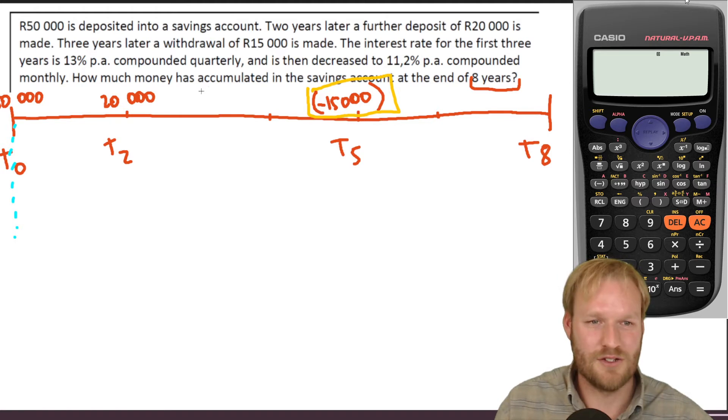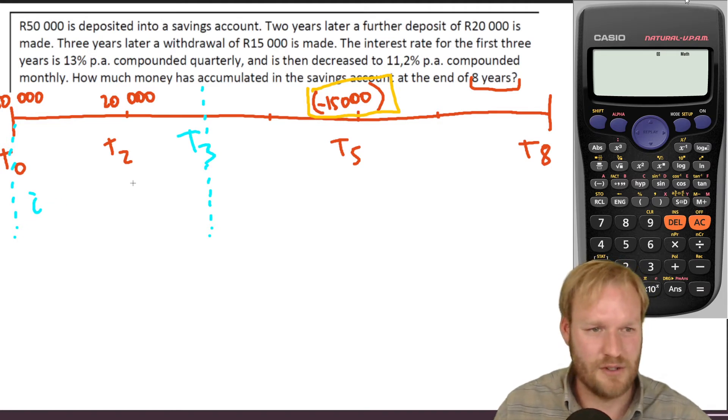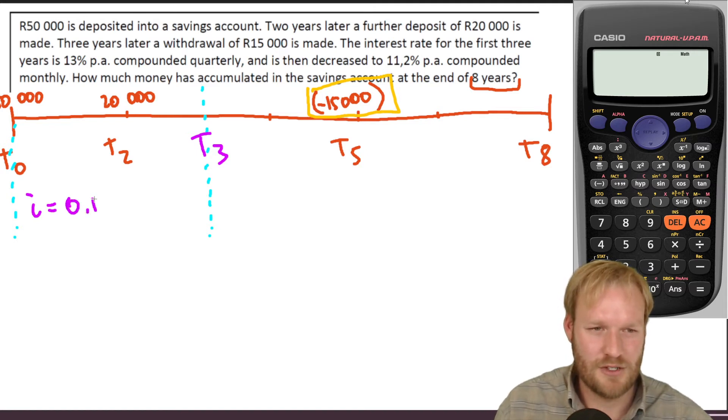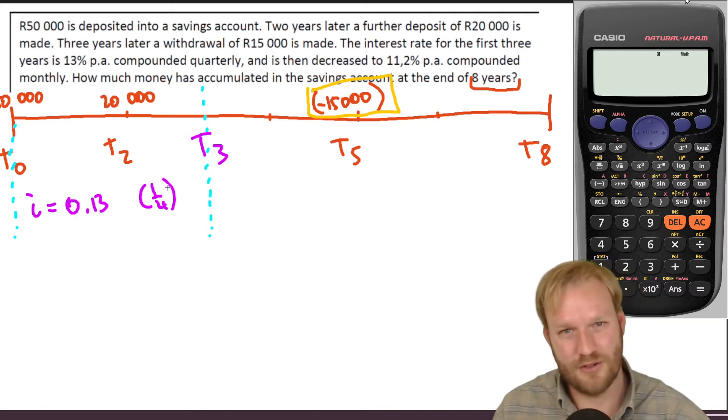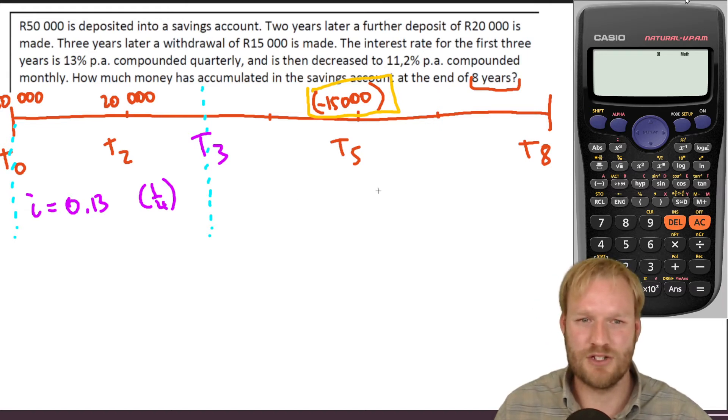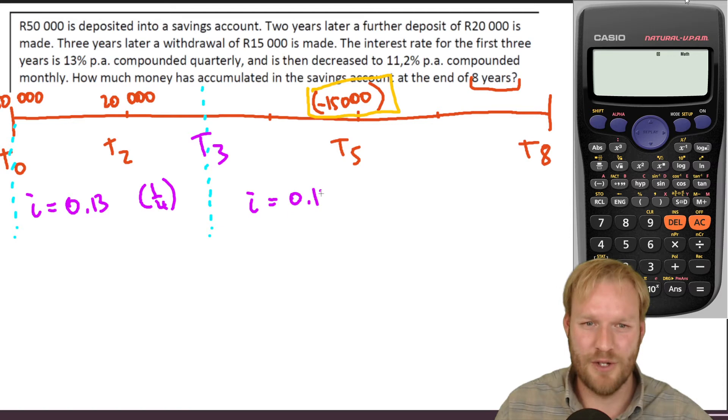And the last bit we've got is that our interest rates change. And that for the first three years, so up to over here at T three, our interest is going to change. I'll change this color because it doesn't come out that clearly. T three, our interest rate here is 13% per annum compounded quarterly. So one way that I like to do is put zero comma one three, and just put kind of a quarter over there, because then I know that I'm dealing with zero comma one three over four. Sometimes people might write over four. That seems a little bit strange to me because the interest rate isn't that over four, the interest rate is that quarterly.